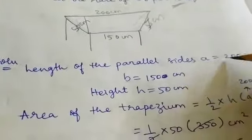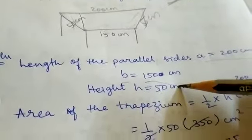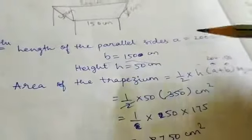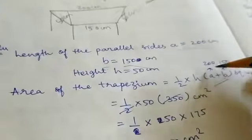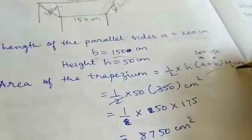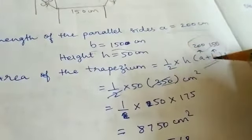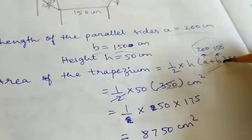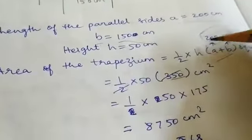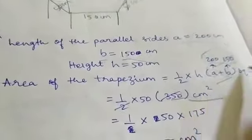Area of trapezium equals half into height into sum of parallel sides. So half into 50 into (a plus b). First solve the brackets, so 200 plus 150 equals 350. Put it in centimeters, so centimeter square.